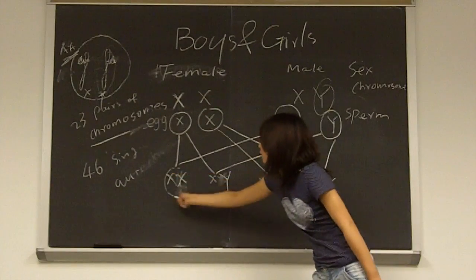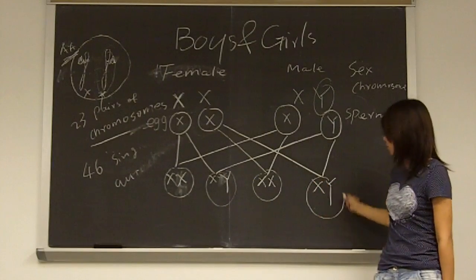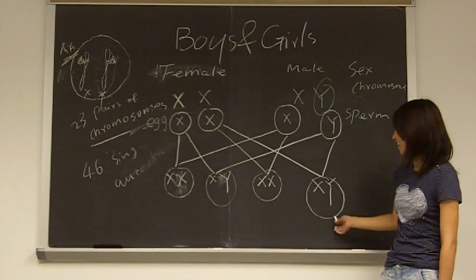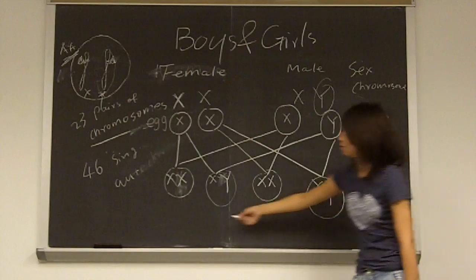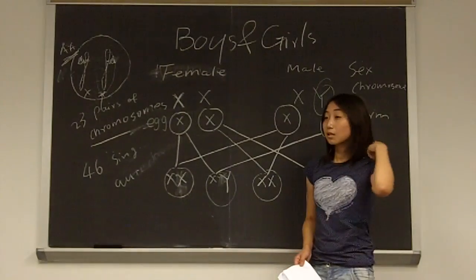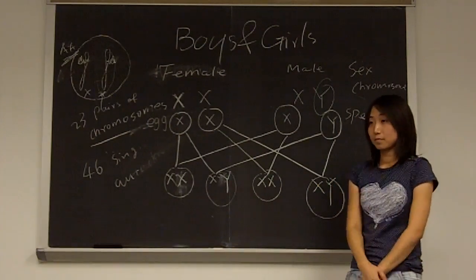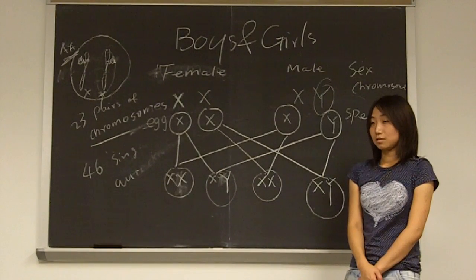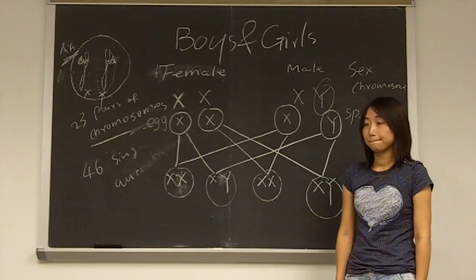These two will be a girl maybe, and this will be a boy maybe. So we have 50% to get each girl or boy. So basically, during the whole fertilization reproduction process, it's a probability. You do not know if you're going to get a girl or a boy because the chromosomes just pair up in a random way.